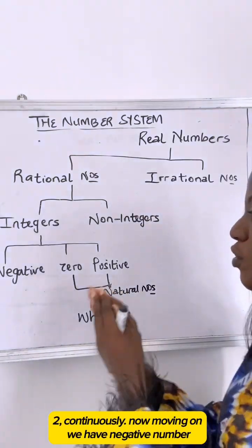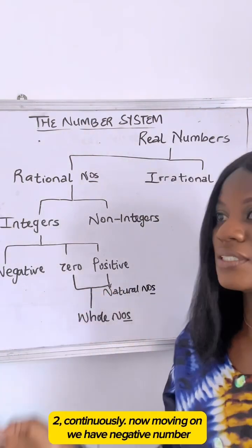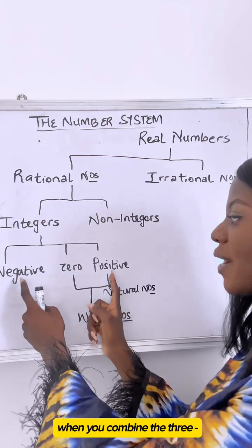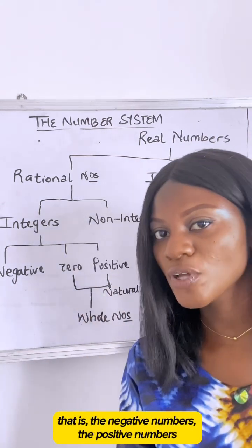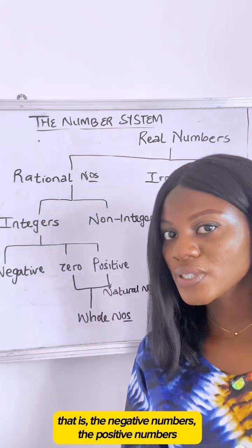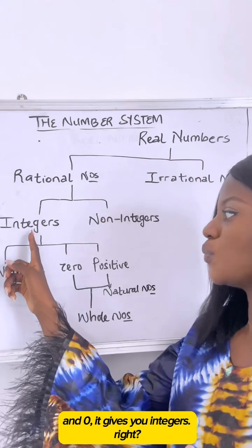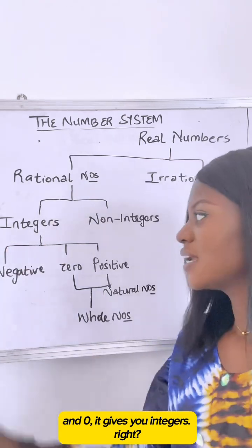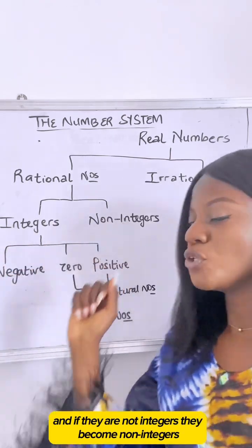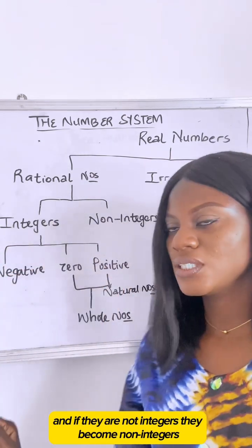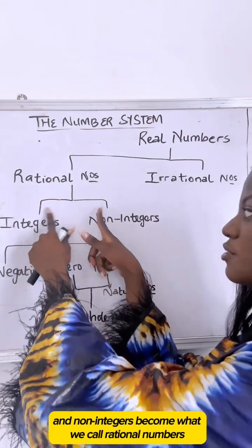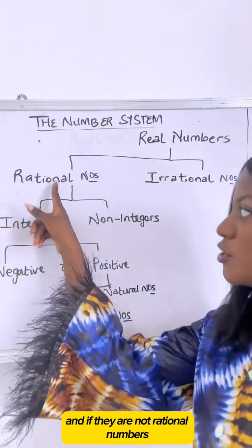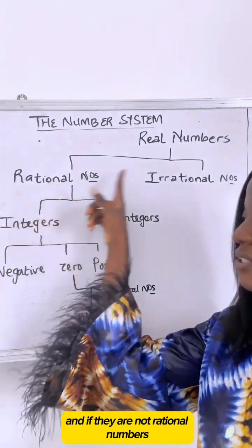Moving on, we have negative numbers. When you combine negative numbers with positive numbers and zero, it gives you integers. Now if they are not integers, they become non-integers. So integers and non-integers together become what we call rational numbers.